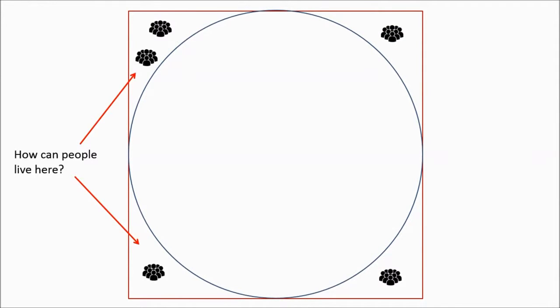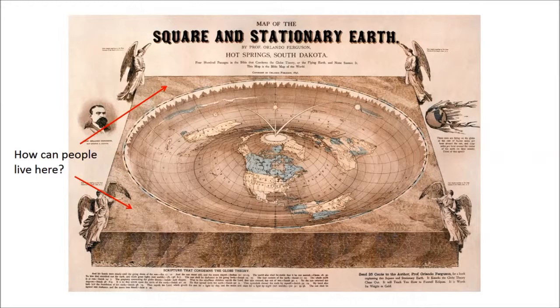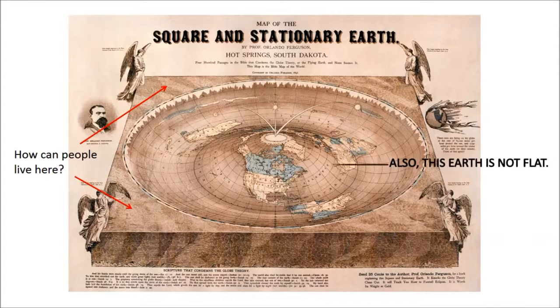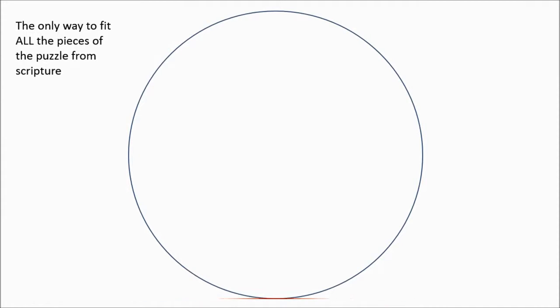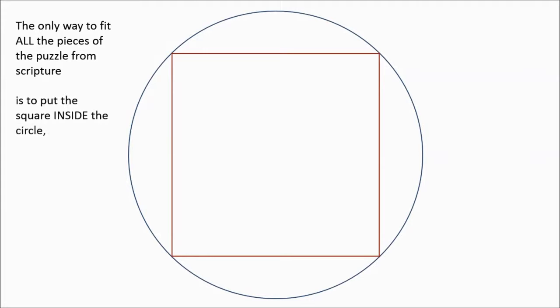The only way to fit all the pieces of the puzzle from scripture is to put the square inside the circle. No matter what other issues this raises, scripture cannot be in error. It's the benchmark, it's the foundation. Now God can look down and sit upon the circle of the earth, he's inscribed a circle on the face of the deep, and he's got four corners where people can be gathered from and where angels can stand.